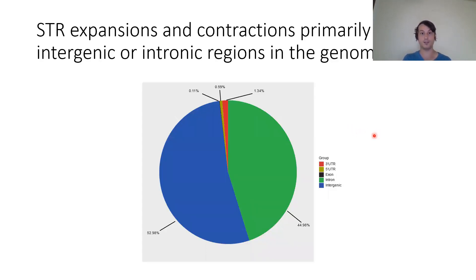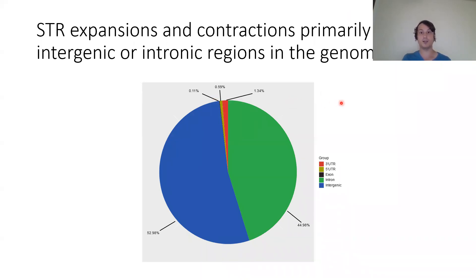Looking at the genomic location of all de novo STRs: as expected, about 53% landed in intergenic regions, approximately 45% in intronic regions, small percentages in 5' UTRs and just over 1% in 3' UTRs. Only two of all our de novos were found in exonic regions, and those were trinucleotide or hexanucleotide repeats — unlikely to disrupt a reading frame.